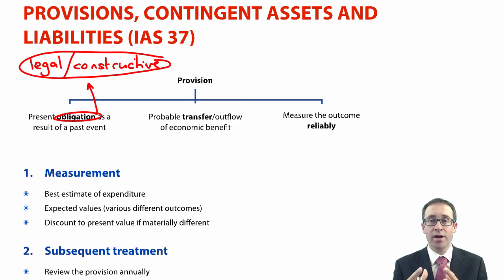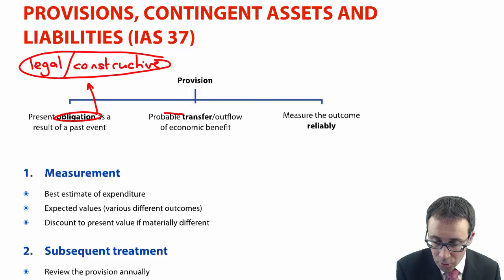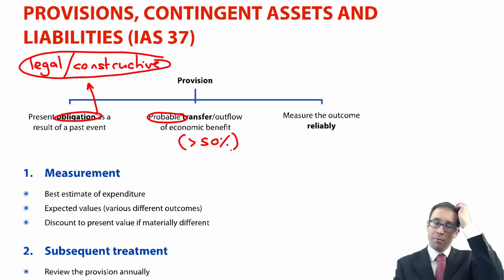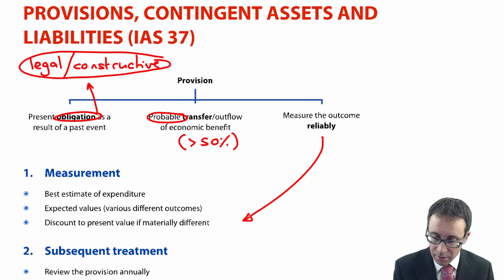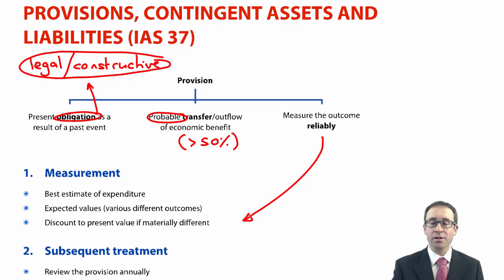Tying things back to the framework and the principles, the measurement principles are that there is a probable outflow and we can measure it reliably. When talking about the word 'probable', the standard says that means more likely than not, which we take as being more than a 50% chance of that actually happening. In terms of reliable measurement, the standard gives some additional rules. We want to make sure that it is the best estimate of the expenditure that we are going to pay out.